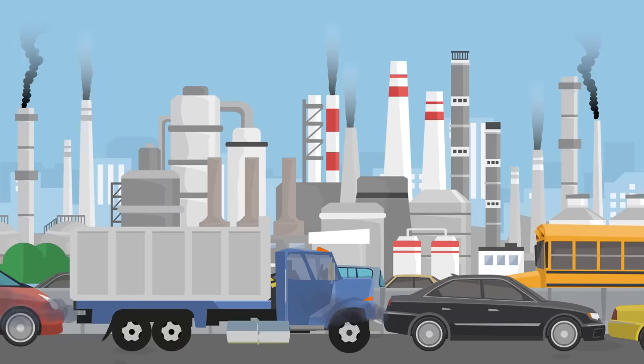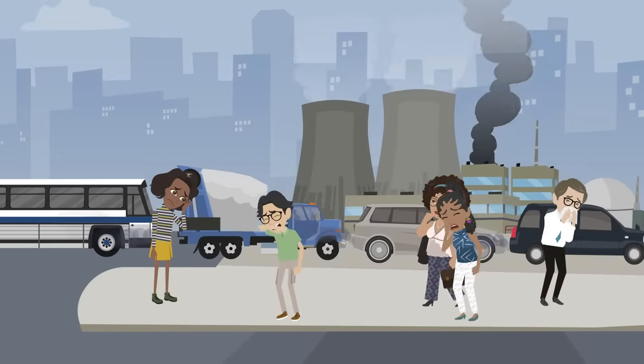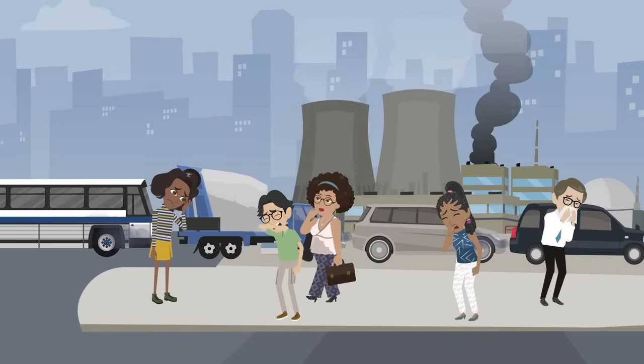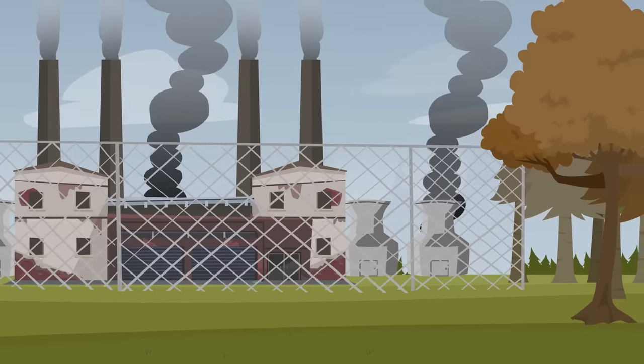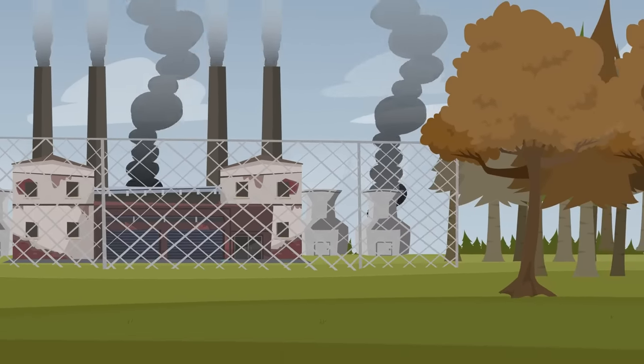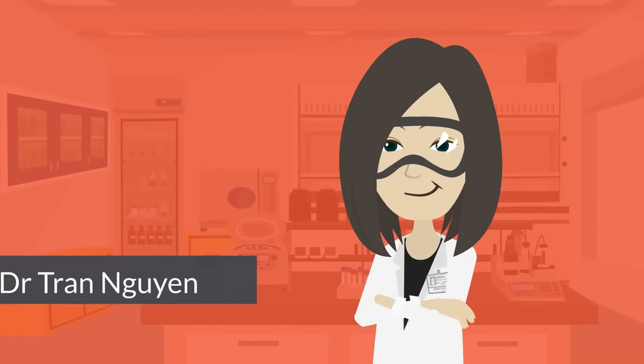Air pollution is a major problem in cities. Emissions from vehicles and industries increase the number of toxic particles and greenhouse gases in the air. These have negative impacts on human health and the environment by causing smog, acid rain, and climate change.